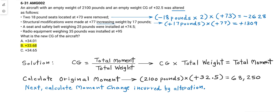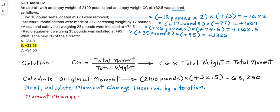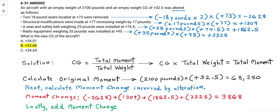Calculation method for the rest of the three alterations. And this then computes positive 1309, positive 1862.5, and positive 3325. So by adding these moment change items we compute a moment change of 3868.